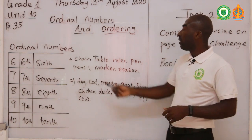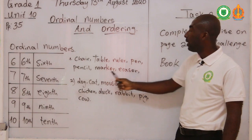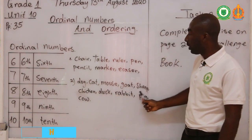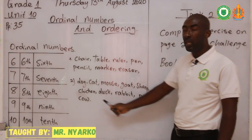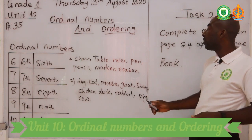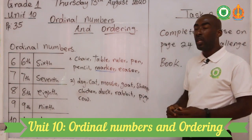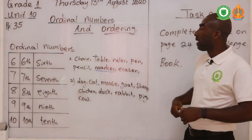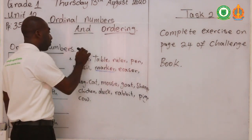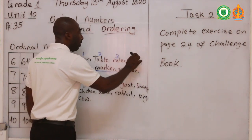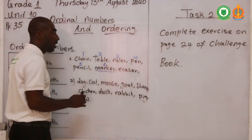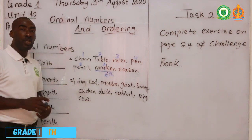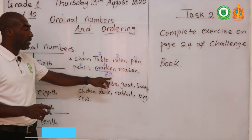We want to find the position of marker. What is the ordinal number for marker? We count: one, two, three, four, five — and this is sixth. Because marker is on the sixth position, the ordinal number becomes sixth. So the marker is on the sixth position.